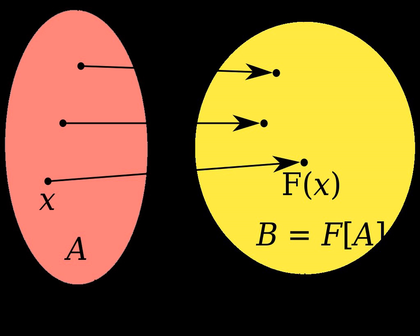The axiom schema of collection is closely related to and frequently confused with the axiom schema of replacement. While replacement says that the image itself is a set, collection merely says that some superclass of the image is a set. In other words, the resulting set B is not required to be minimal.